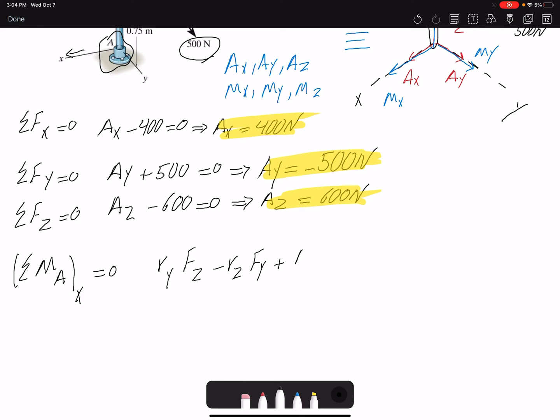Fz here is negative 600, and Ry is 1, minus Rz is 1.25, Fy is 500, plus MX equals zero. So I can find MX to be 1,225 newton-meters. That's the scalar formulation.